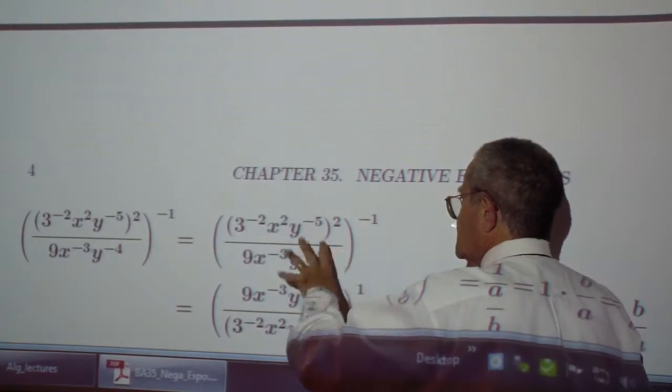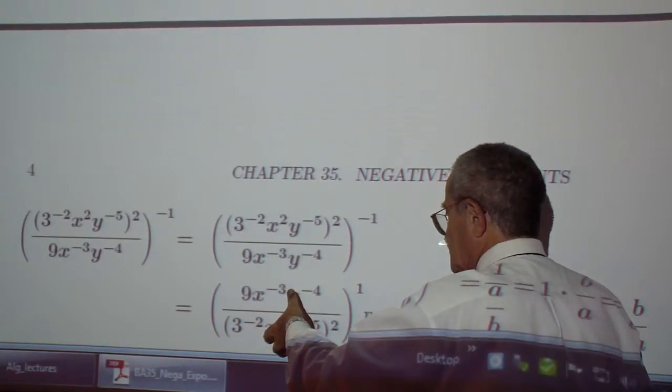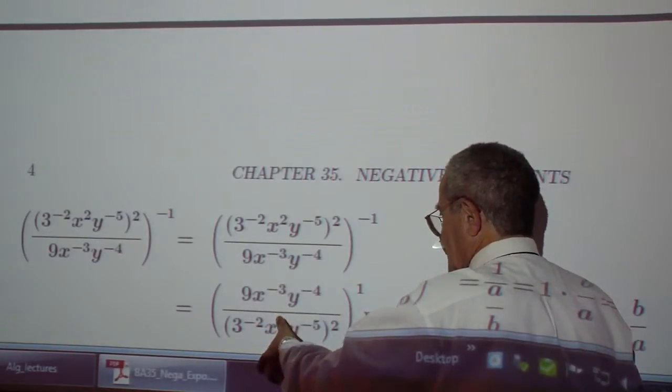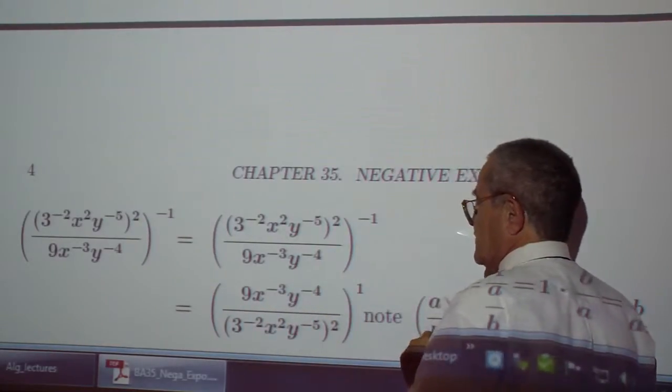I see what happened. Quantity to the negative 2 is 1 over quantity to the positive 2. And when I divide by a fraction, it's the same as multiplying by the reciprocal of the fraction.